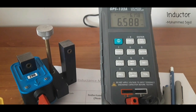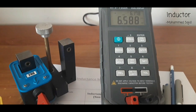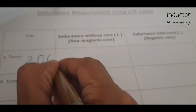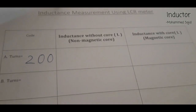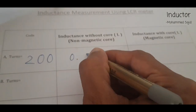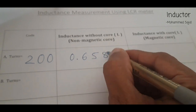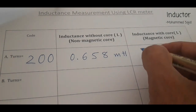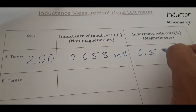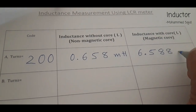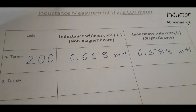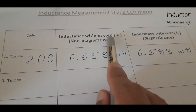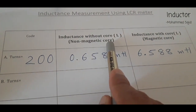We will write this reading in our observation table. Number of turns is 200. Without core — non-magnetic core, only plastic or air — the reading was 0.658 mH. With magnetic core, the reading was 6.588 mH. So without magnetic core inductance is less; with magnetic core, inductance increases.